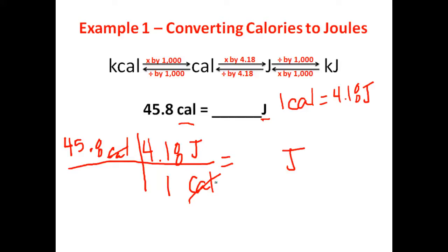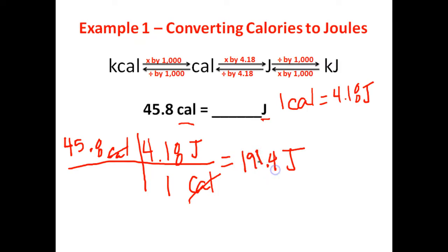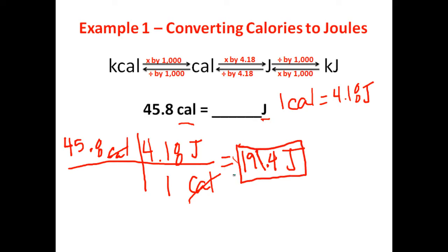Now I'm going to go ahead and put the answer and round it to the tenths place. However, if your teacher is asking you to pay attention to significant figures, your final answer will need to be only three sig figs. But for these problems here, we're just going to round to the tenths place. Our answer here is going to end up being 191.4 joules. This means if you've got 45.8 calories, that is the same thing as 191.4 joules.